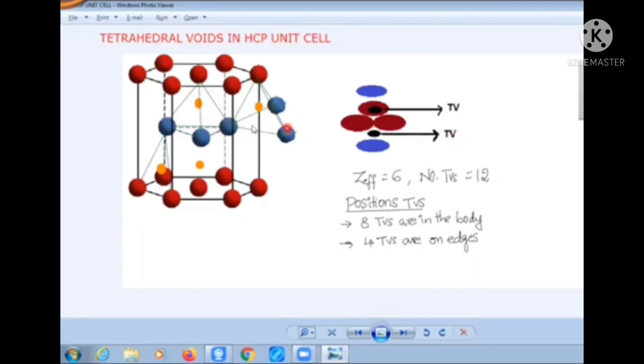These three positions along with this corner make one tetrahedral void on this edge. Similarly we can get one more at this position, at this position with these three atoms, with these three atoms and this corner. So this way on the edges,